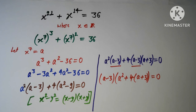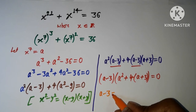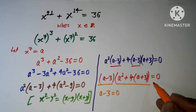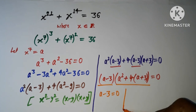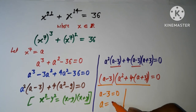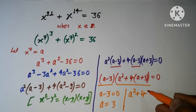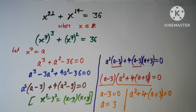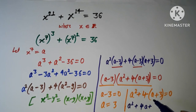Since this is a product equal to zero, either factor must be zero. So either a − 3 = 0, giving a = 3, or a² + 4a + 3 = 0, which is a quadratic equation.